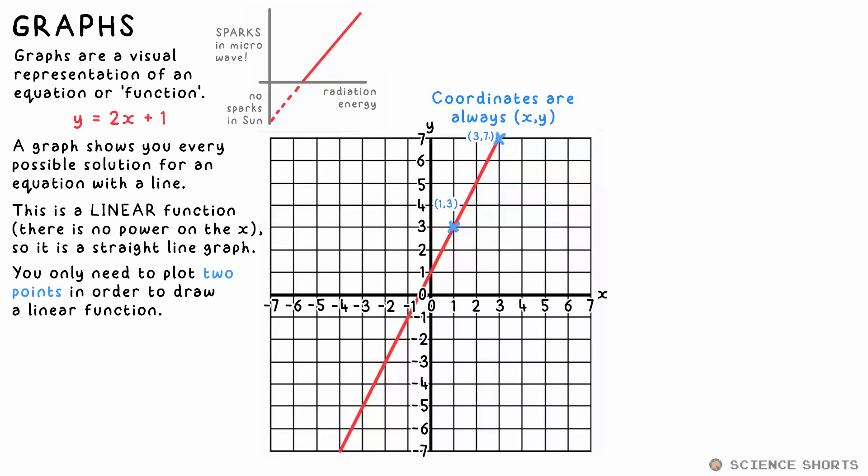What about when x is three? y is seven. There's a point there too. In fact, if we plotted every point by changing x and seeing what y is, we'd end up with this line. But we only need two points in order to draw a straight line graph.